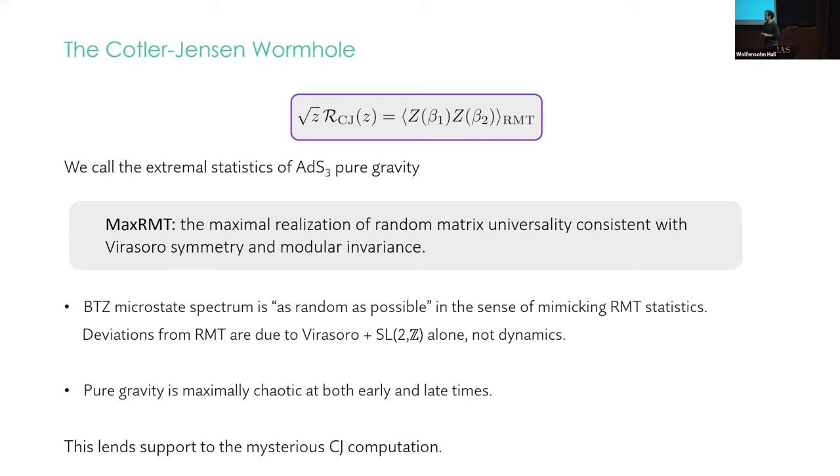We can also phrase this as the statement that pure gravity is maximally chaotic, not just at early times where, say, time is logarithmic in the entropy, you have this Lyapunov behavior. But here also at late times where we're in this RMT regime where the times are exponential in the entropy. And pure gravity is maximally chaotic in this sense.